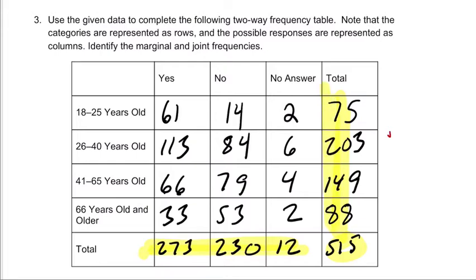And those are called your marginal probabilities. I'm going to label that, right? These are the marginal probabilities. They're the margins of the table, essentially, or marginal frequencies. It's a probability if it's a percent, but these are just counts, so they're frequencies.